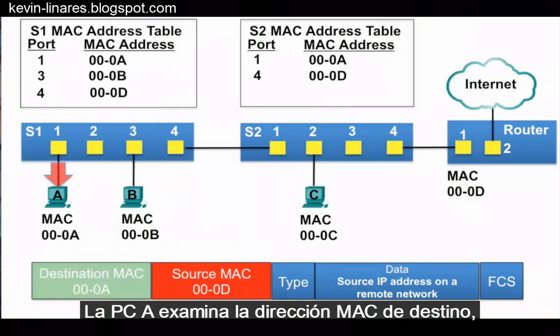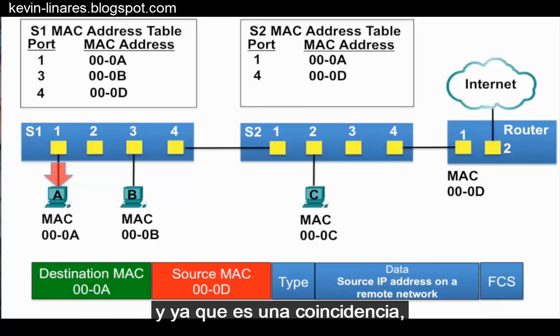PCA examines the destination MAC address, and because it is a match, it accepts the rest of the frame.